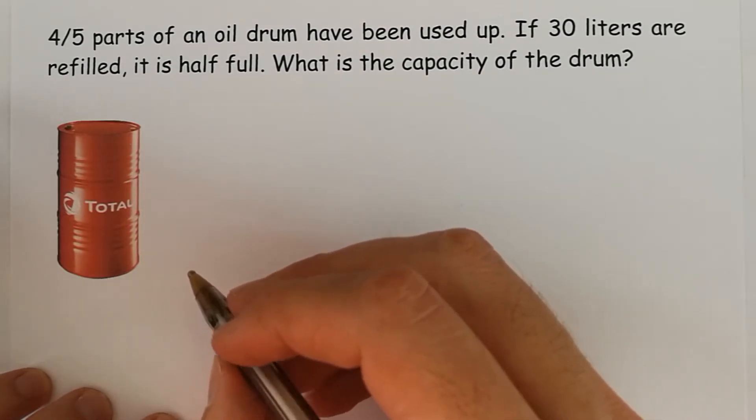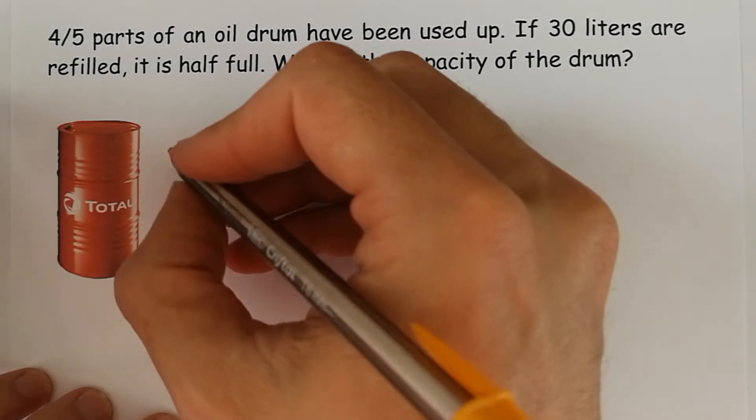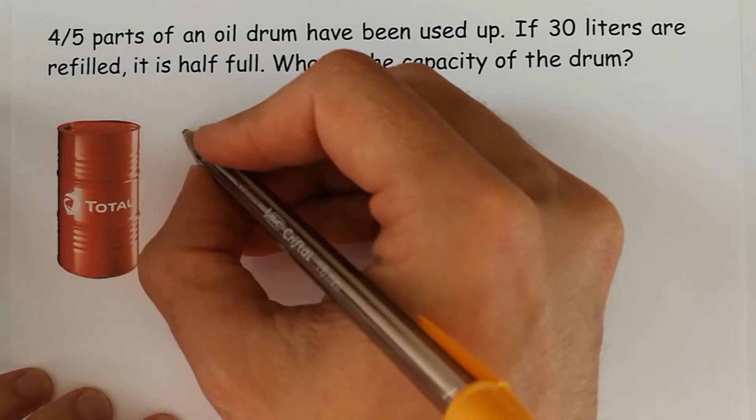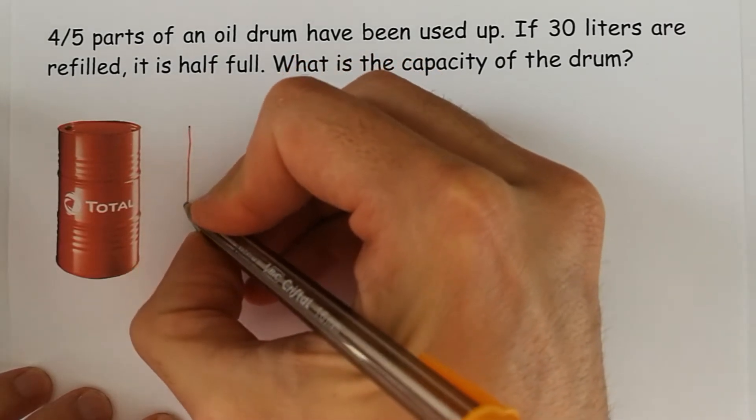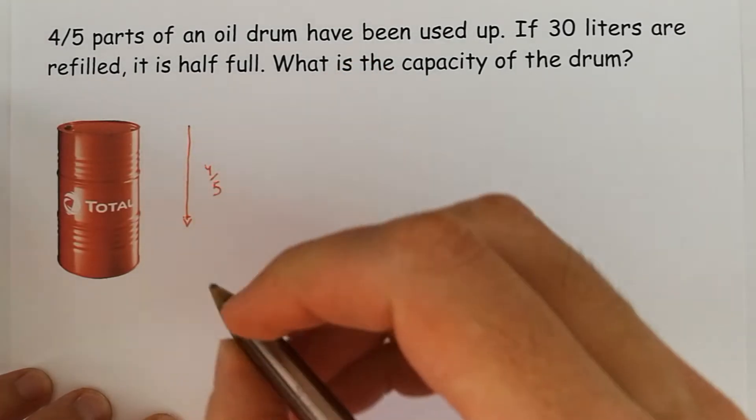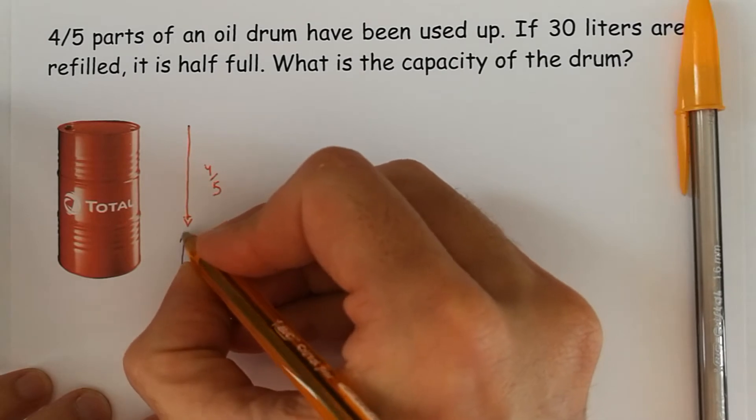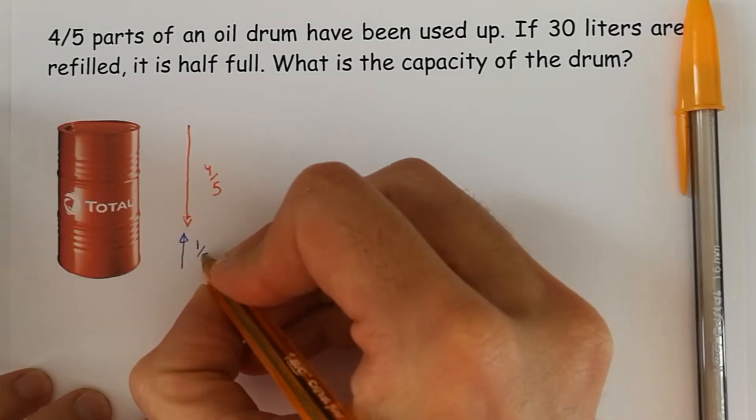The first one is going to be without algebra. So, let's imagine we have this oil drum, we have taken away four-fifths. So, what we have here now is one-fifth of the oil drum.